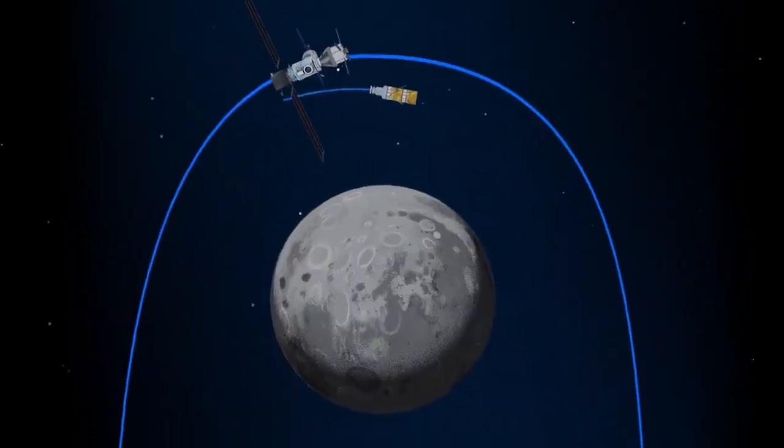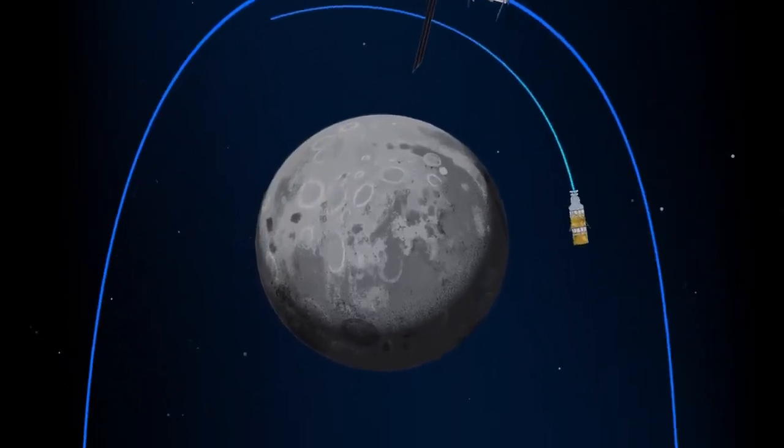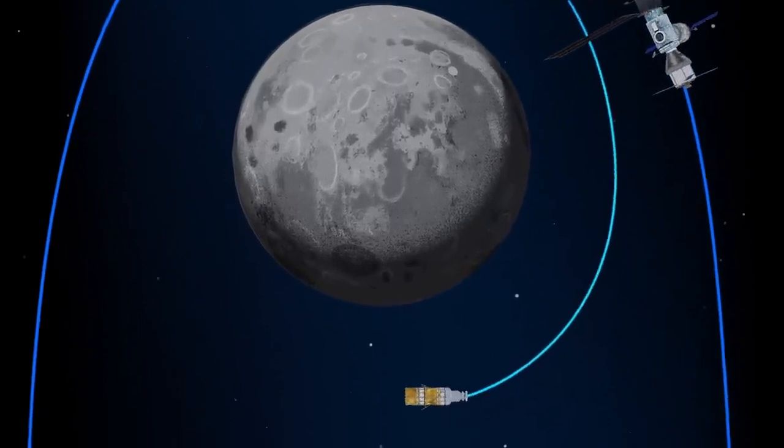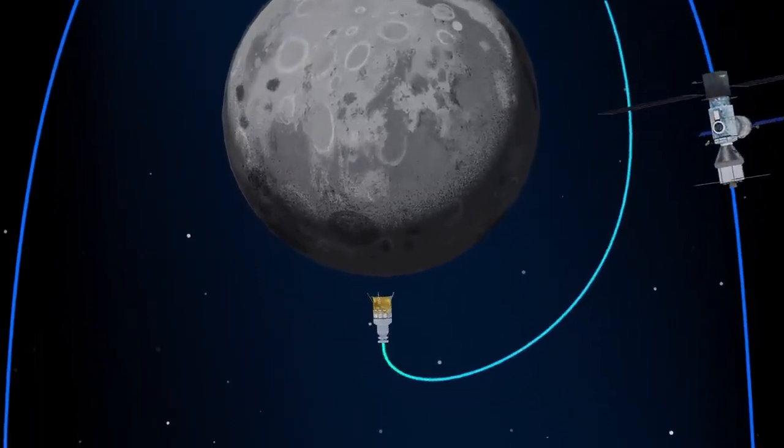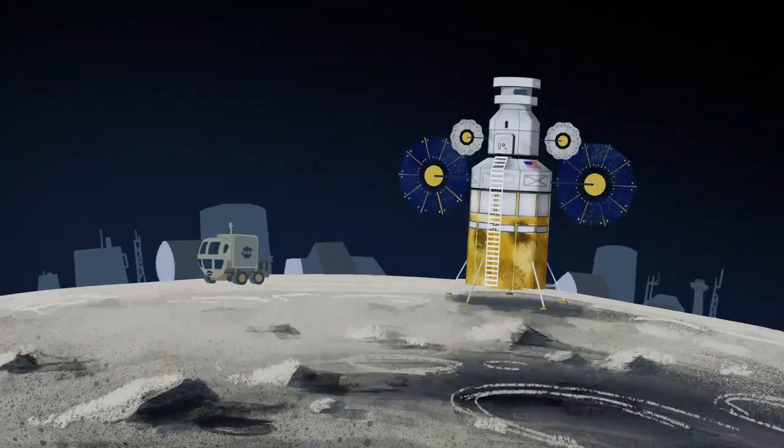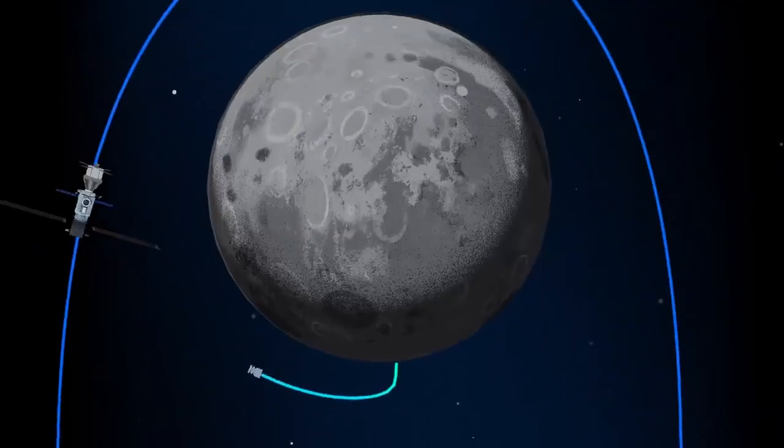The lunar lander system itself is built for three unique steps. Descending from the halo orbit of Gateway down to a low lunar orbit, descending from low lunar orbit to the surface, and once the lunar mission is complete, launching from the surface of the Moon and ascending all the way back to the orbiting Gateway.